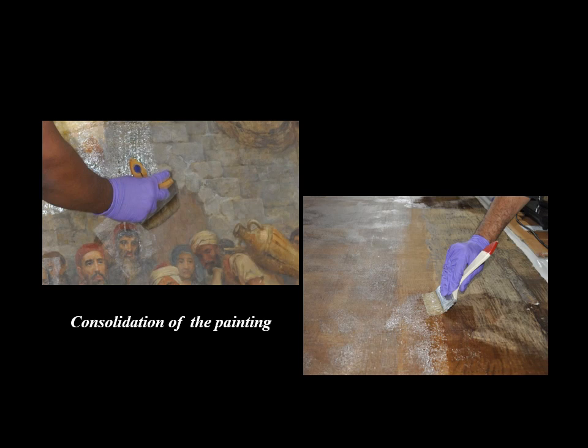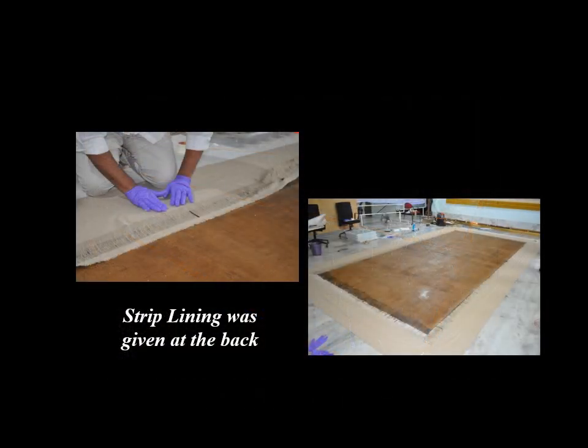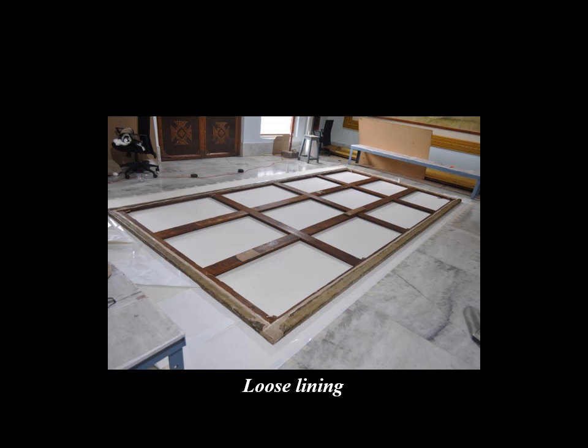As the losses were prominent and flaking had occurred, full consolidation of the painting was performed. After that, flattening was done to minimize the bulges in the painting. The next step included tear mending at the bottom portion, and strip lining was applied at the back for considerable strengthening of all four edges. Two loose linings were given to the stretcher so that the painting and the stretcher would not come in direct contact. Later, the painting was stretched on the stretcher for further conservation.